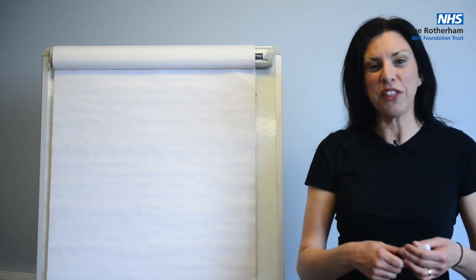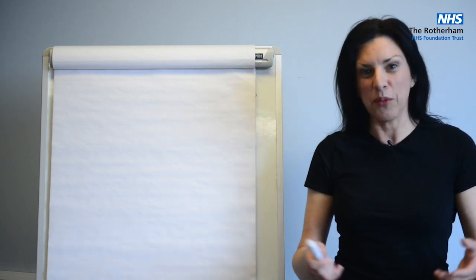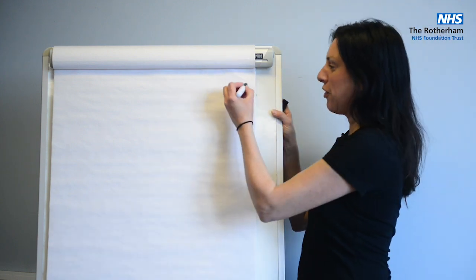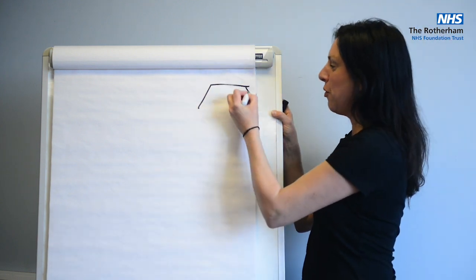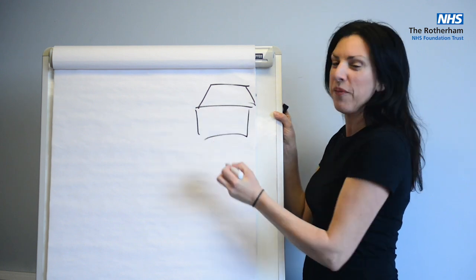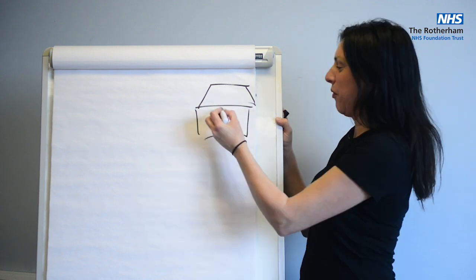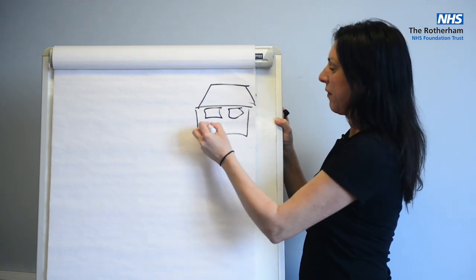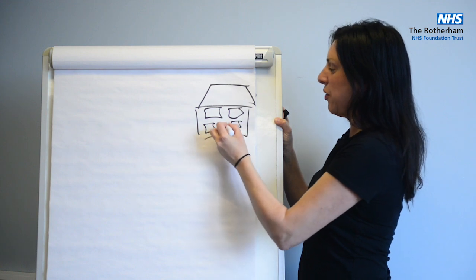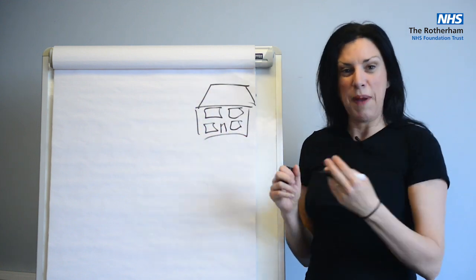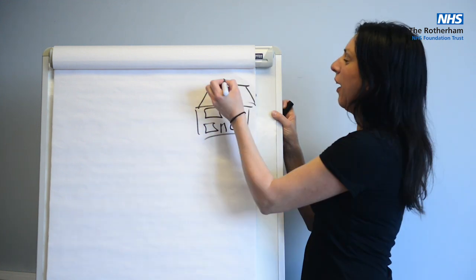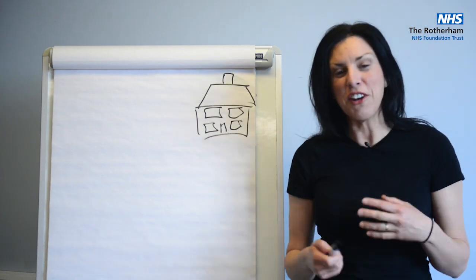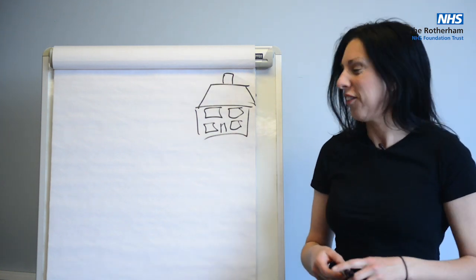I would like you to think about a house — a house which has two rooms at the top and two rooms at the bottom. It has a front door, a back door, and a chimney. So how does that relate to the heart?